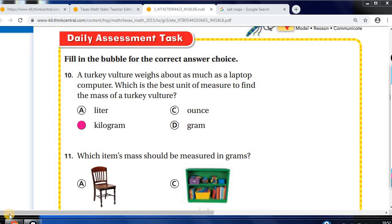Let's go ahead and take a look at our daily task assessment. We're looking at the unit of measurement for weight for mass. It's either in kilograms or grams. We know that one gram is about the weight of a paperclip and we know that one kilogram is about 1,000 paperclips. So let's look at number 10. A turkey vulture weighs about as much as a laptop computer, which is the best unit of measure to find the mass of a turkey. We're not going to look at liters. That's for liquid. Ounces is not the metric system. So you have grams and kilograms. Your answer would be kilograms.